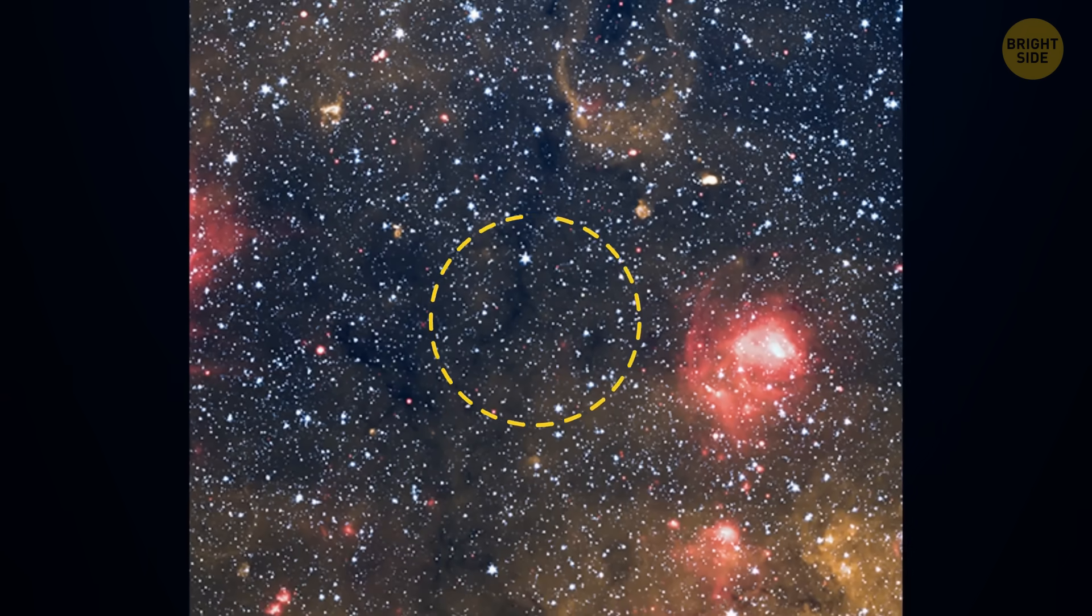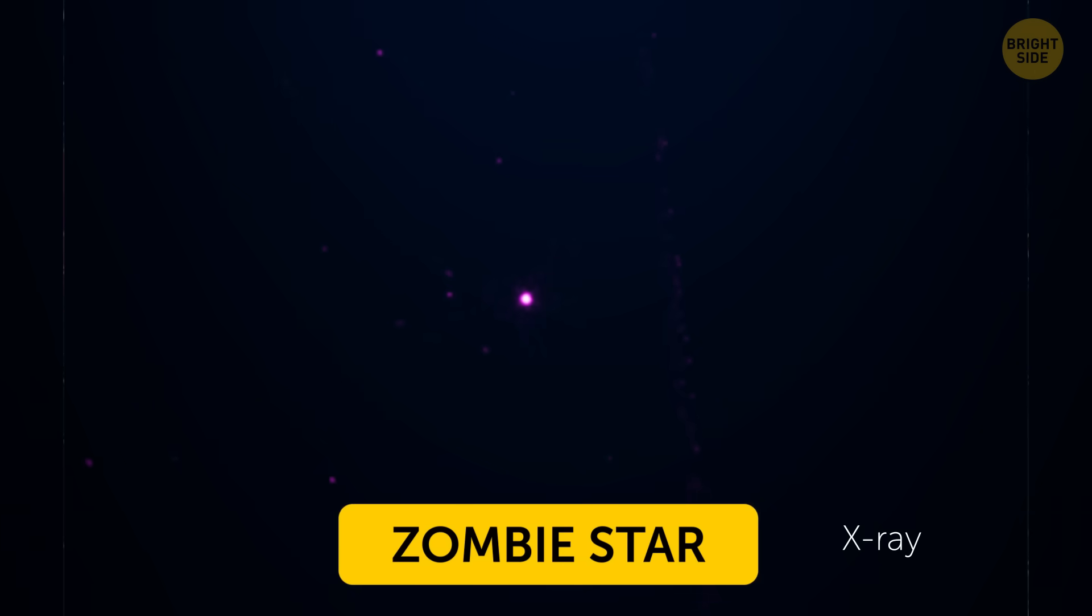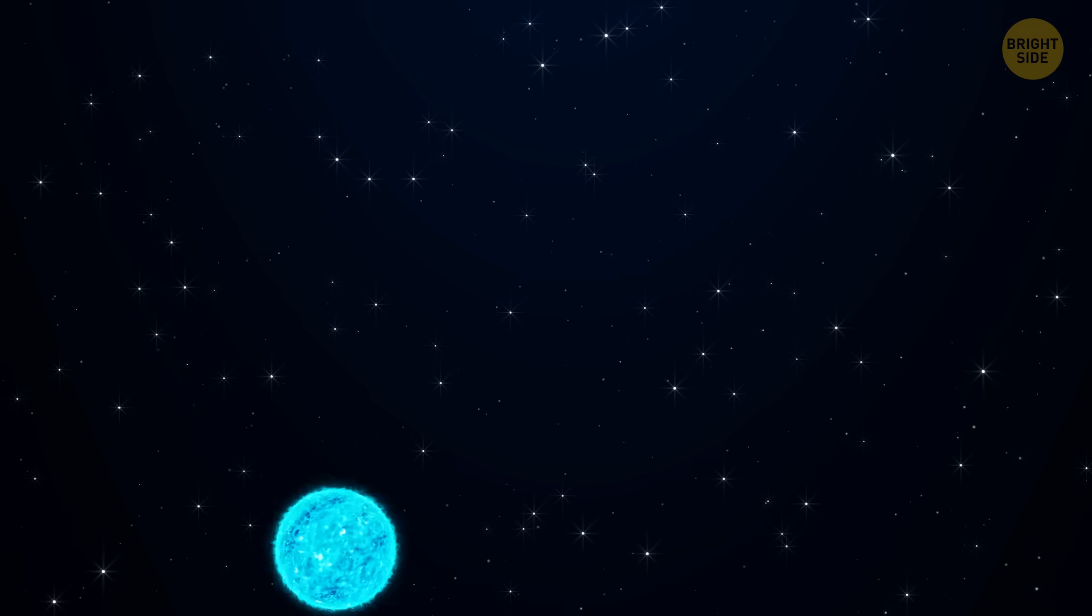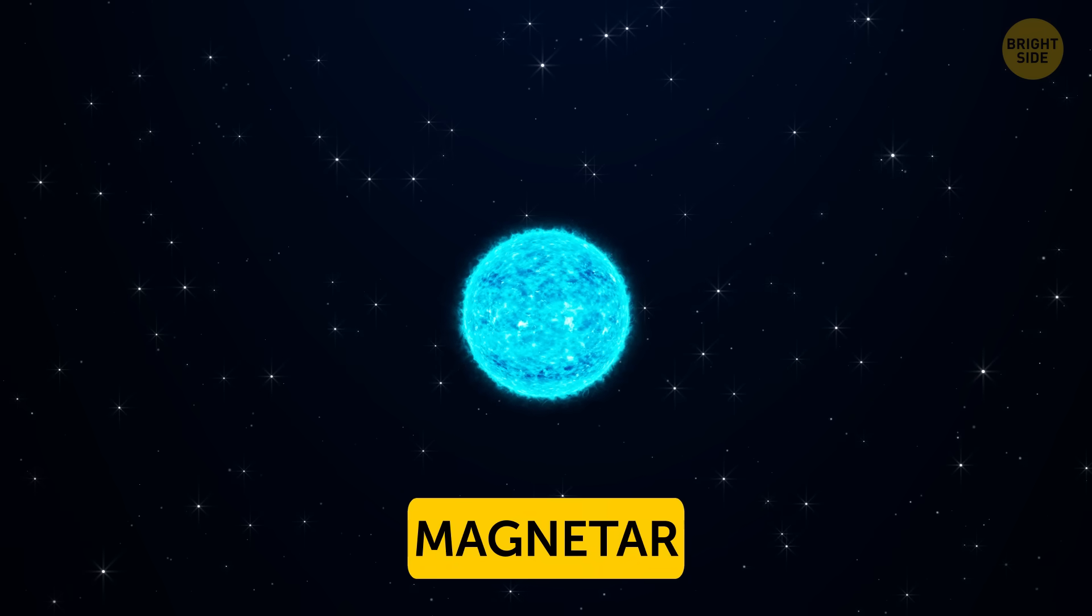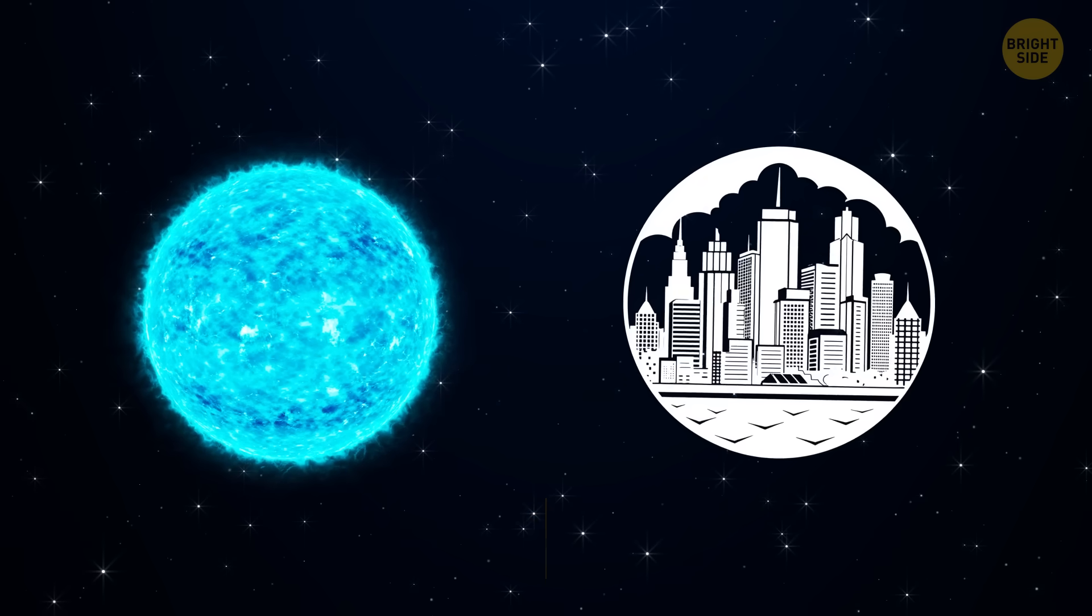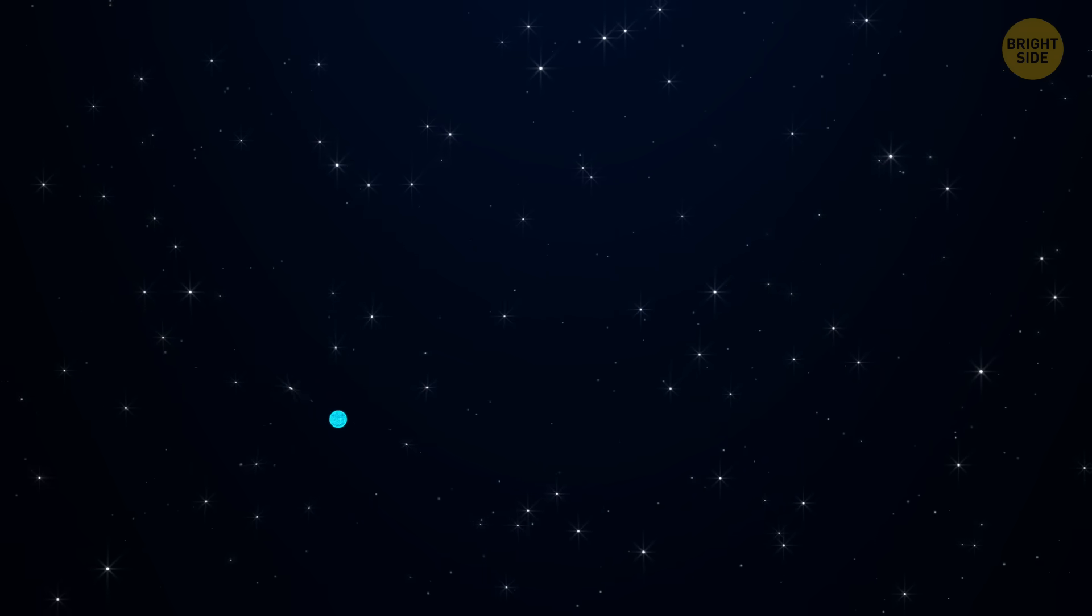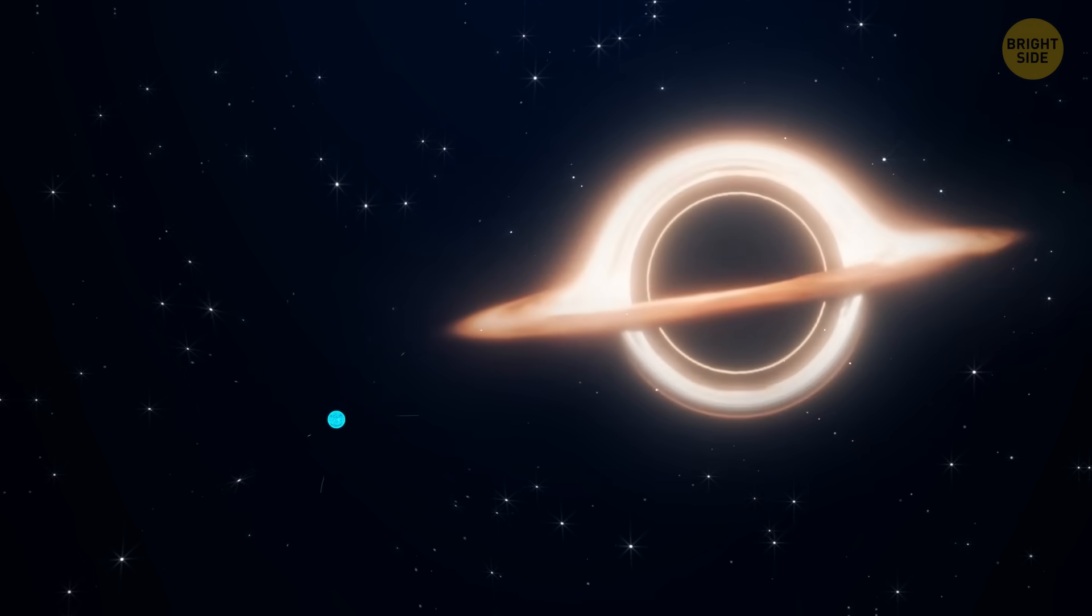This bizarre space object got its name of a zombie star, all because it's the leftover part of a star that passed away a long time ago but is still moving. This zombie star is a kind of object called a magnetar, a super-small, super-heavy ball about the size of a city but heavier than the sun. That makes it one of the densest objects in space. Only black holes are denser.